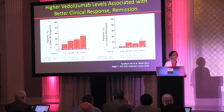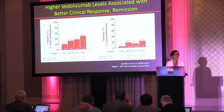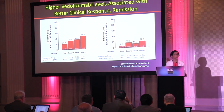We won't spend too much on the non-anti-TNFs, other than to say this concept is still applicable for our other therapies. For vedolizumab, higher trough levels are again associated with better clinical response as well as clinical remission. And at DDW last year for ustekinumab (Stelara), we saw the same association — better outcomes at week eight with a trough level of about five.